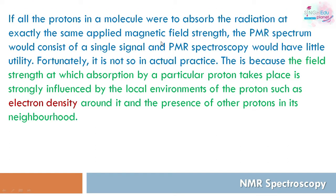If all protons in a molecule absorbed radiation at the same magnetic field strength at the same time, the PMR spectrum would show only one signal, and PMR spectroscopy would have no significance. But in actual practice, this does not happen, because the field strength at which absorption by a particular proton takes place is strongly influenced by its local environment — such as the electron density around it and the presence of other protons.